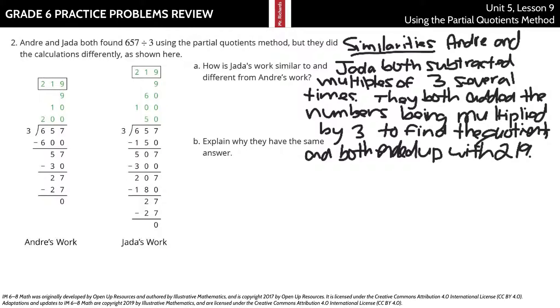For the similarities, Andre and Jada both subtracted multiples of 3 several times. You have 200 groups of 3, 10 groups of 3, 9 groups of 3. And Jada's, you have 50 groups of 3 for the 150, 100 groups of 3 for the 300, 60 groups of 3 for the 180, 9 groups of 3 for the 27. They both got down to 0 and had a quotient of 219.